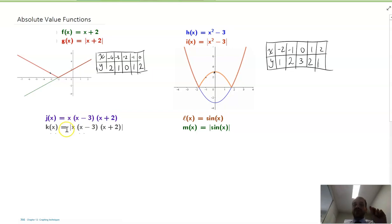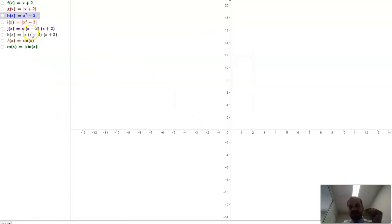And then, you should be able to think about what the absolute value of x times x minus 3 times x plus 2 might be. So, let's draw our cubic x times x minus 3 times x plus 2.